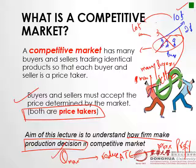In that case, no buyer can influence the price and no seller can influence the price. In that sense, both are called price takers — they take whatever price is in the market. They will survive in the market if they can produce at the market price; if they cannot produce at the market price, they will go out of business. So buyers and sellers must accept the price determined by the market.